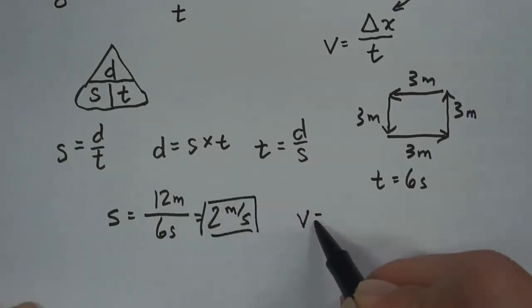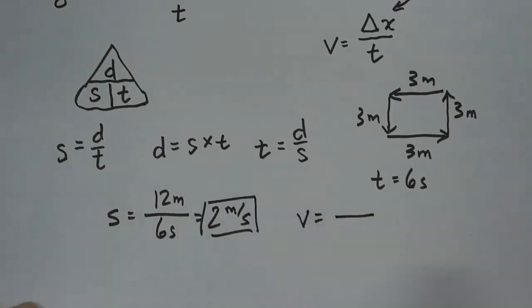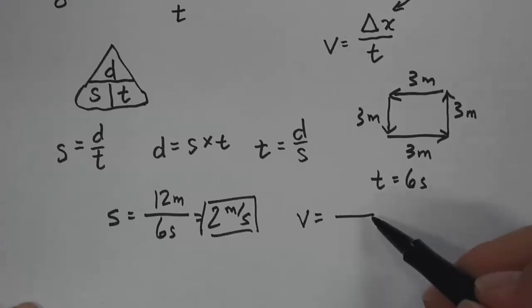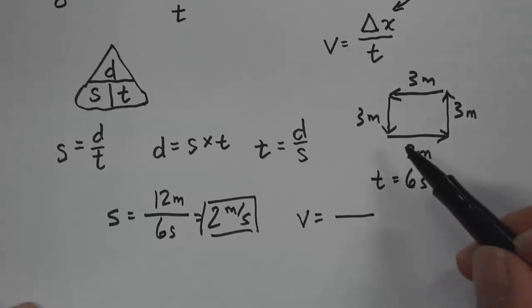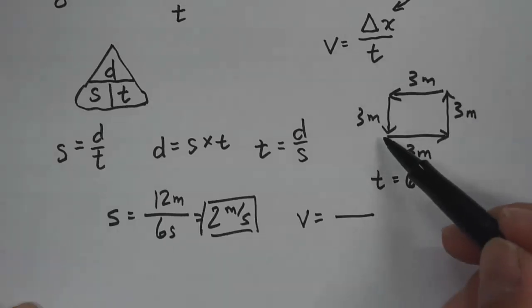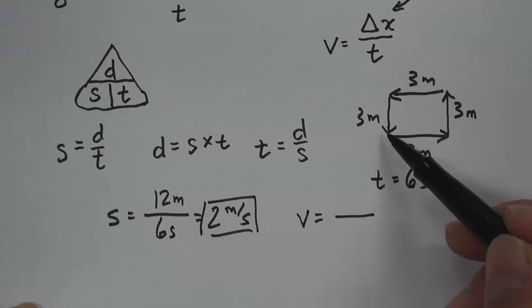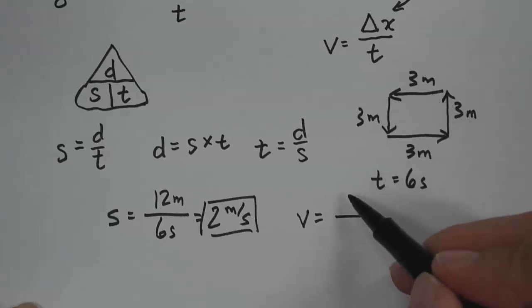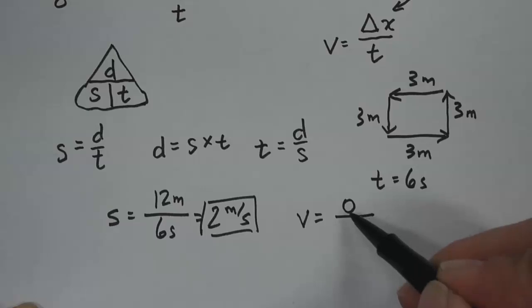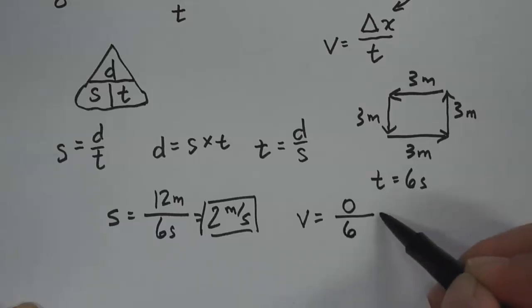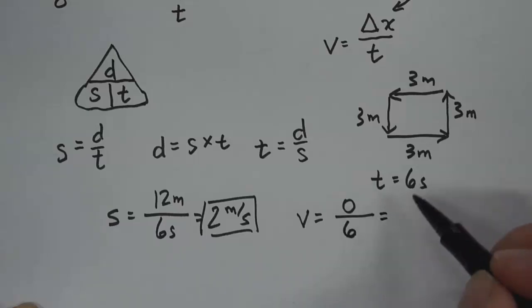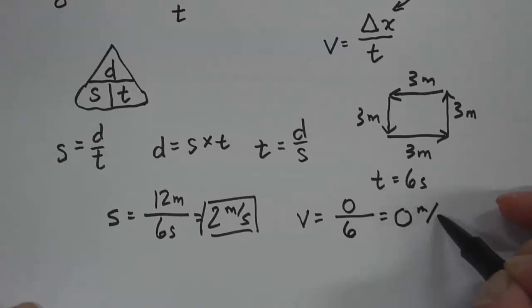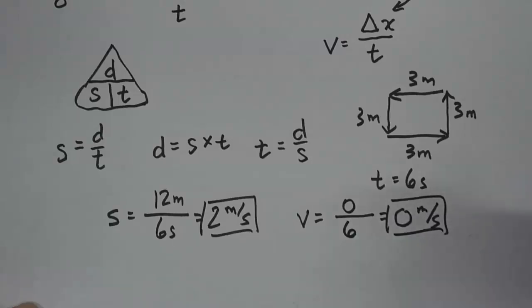But your velocity is different. Velocity uses displacement, which is the change in position. Since you're back to where you started, your displacement is zero. Zero divided by 6 seconds is still zero. So your velocity is zero.